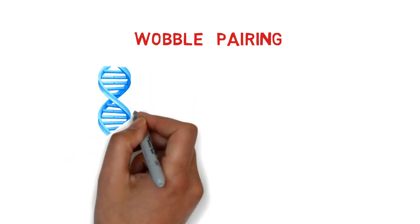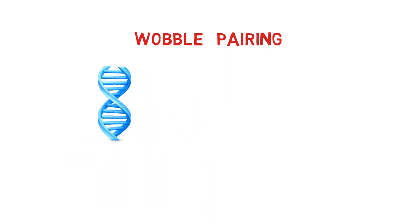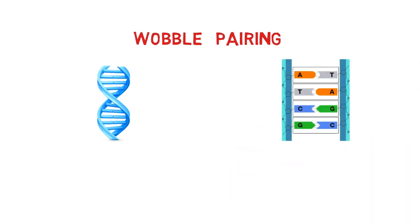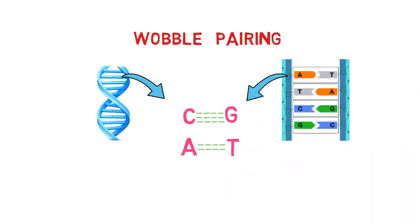In today's video, I will discuss wobble pairing in RNA. In Watson and Crick's model of DNA, they describe the pairing among nucleotides as follows. In DNA, this pairing system works well, but in RNA there are some base pairs that deviate from the Watson and Crick model.